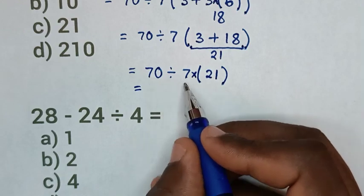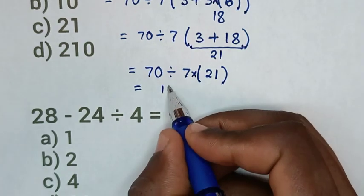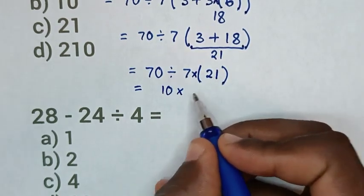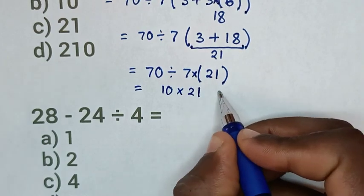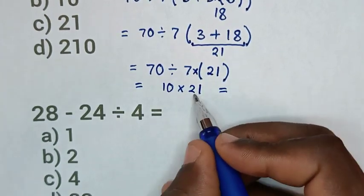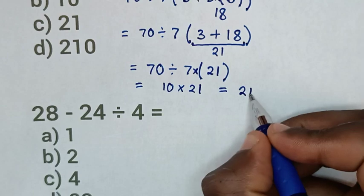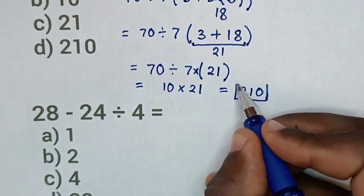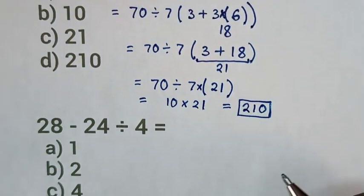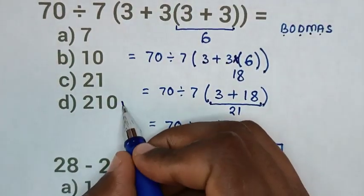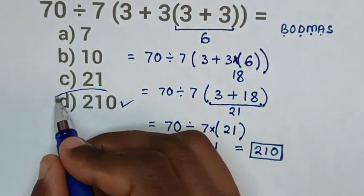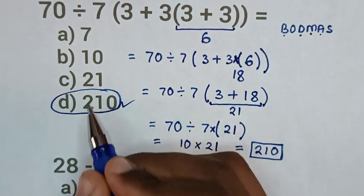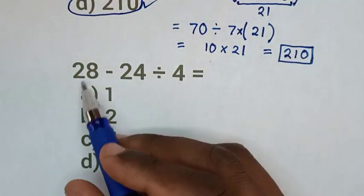It will be equal to 70 divided by 7 is 10, then times this 21. So it will be equal to 10 times 21 is 210. So this is the correct answer. Selecting the multiple choice, it is D.